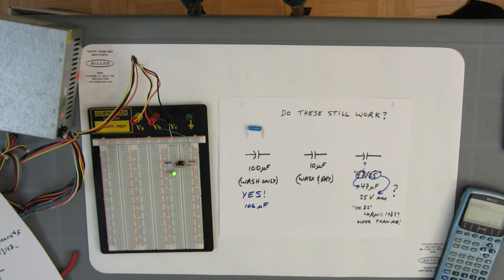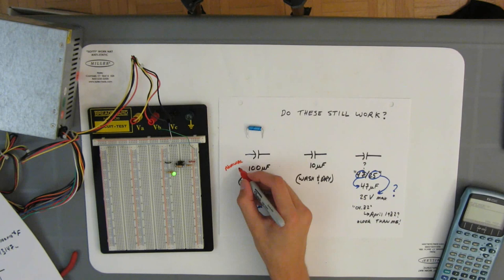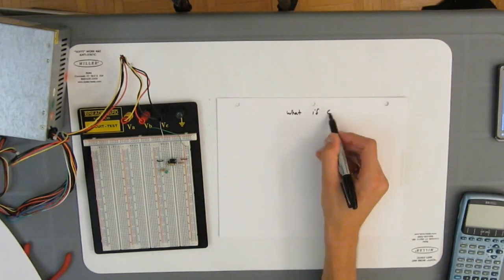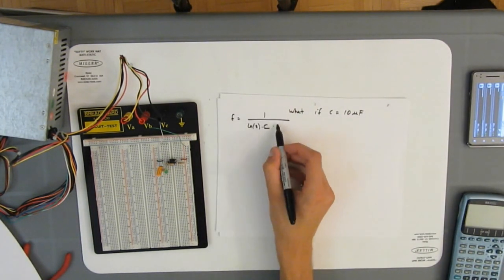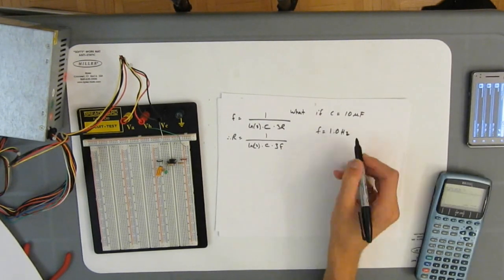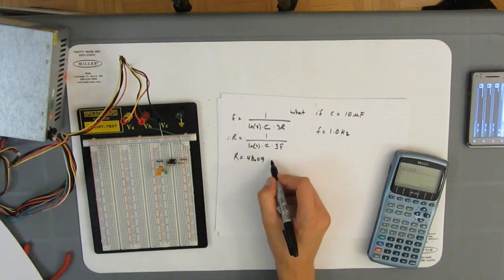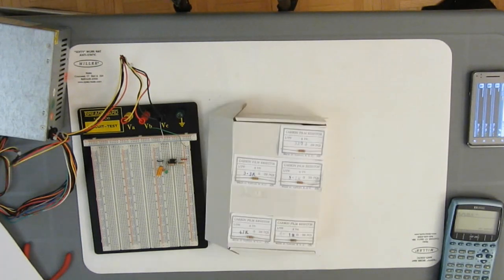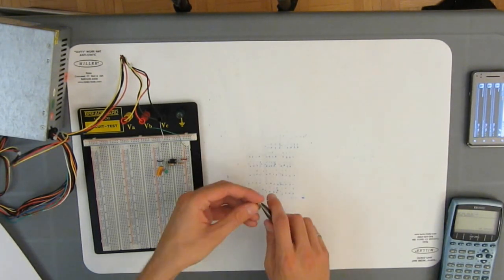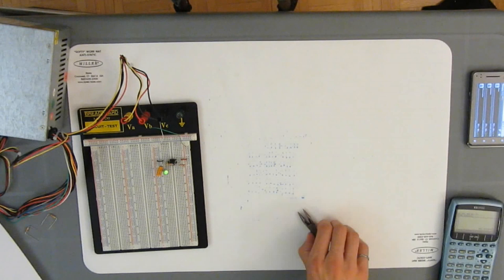So that takes care of the blue capacitor. It only went through the wash anyway. What about the yellow-gold capacitor, rated at 10 microfarads, that went through the washer and the dryer? Well, we just go through the same process. Find a suitable resistor value. In this case, we want one or two hertz, so 48.09 kilo-ohms? 47 kilo-ohms should do. Build the circuit.